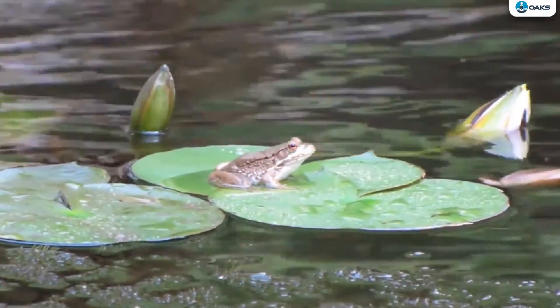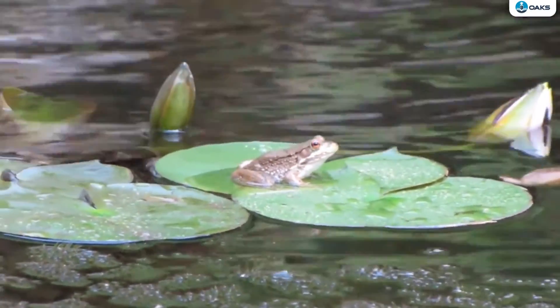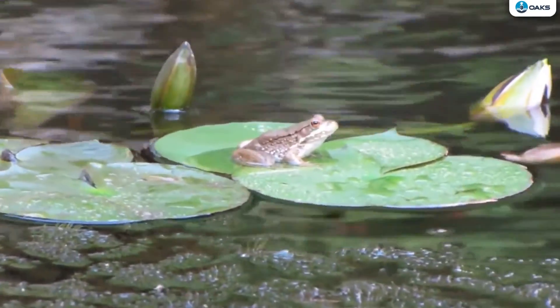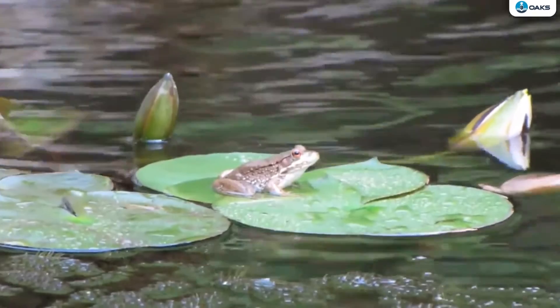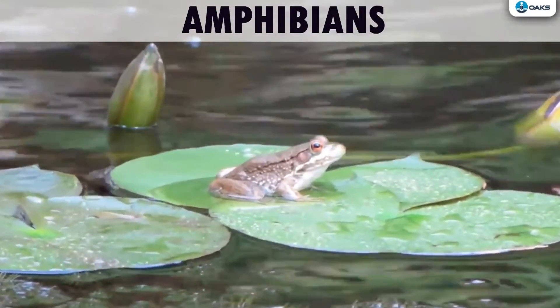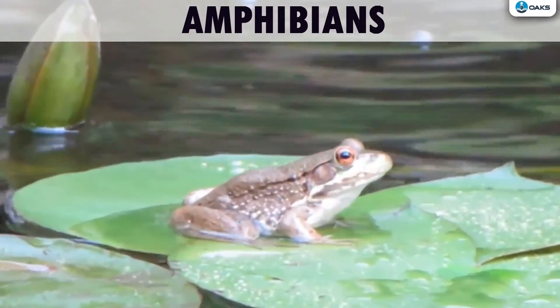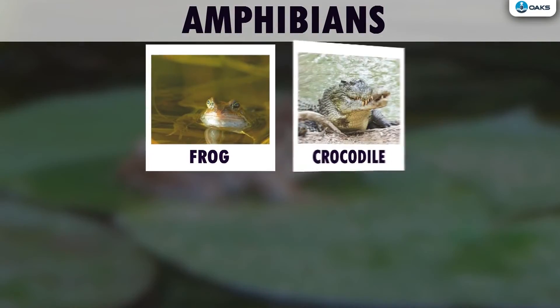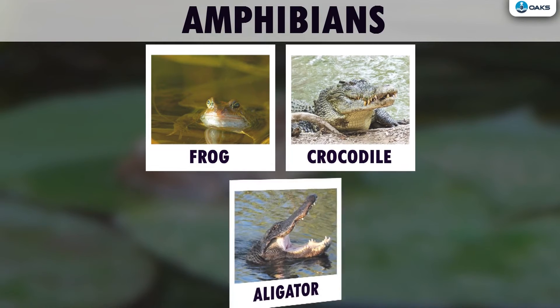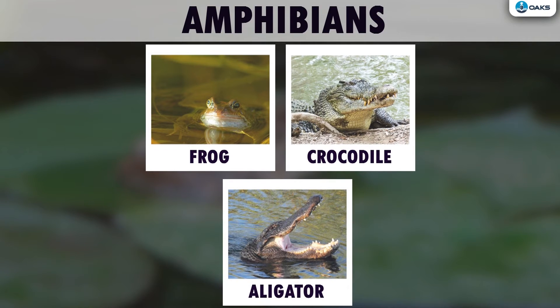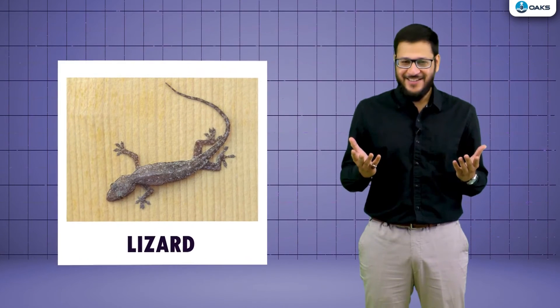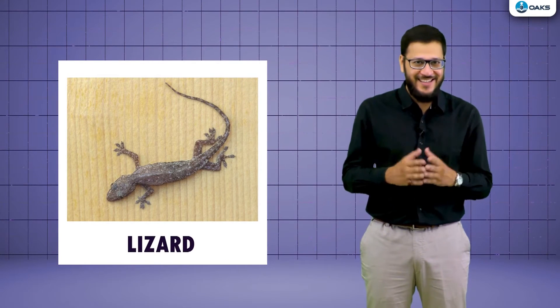These animals live both on land and in water — they are called amphibians. Some examples are frog, crocodile, and alligator. Now, have you ever seen a lizard? Are you afraid of it?